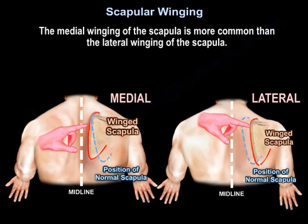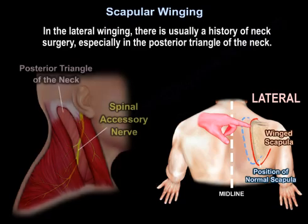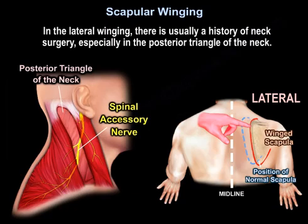The medial winging is more common than the lateral winging. The medial winging of the scapula will be worsened by arm flexion, while the lateral winging of the scapula will be worsened by arm abduction. In lateral winging, there is usually a history of neck surgery, especially in the posterior triangle of the neck.